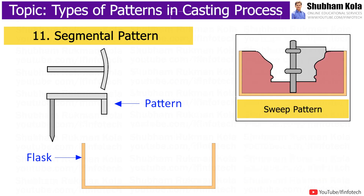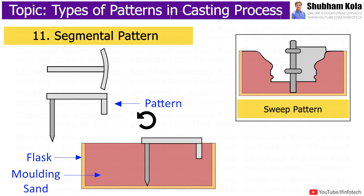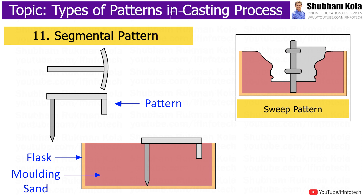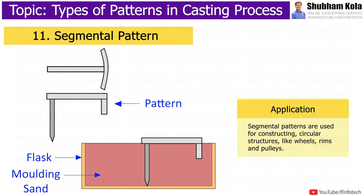Segmental pattern is just similar to sweep pattern; their working structure is almost similar. For designing the required shape or structure of mould, they both employ a part of the pattern. As the name suggests, segmental pattern is in the form of segments and is used for moulding circular or round structures. In sweep pattern there is complete rotation, but in segmental pattern there is no complete rotation — we can rotate partly to get the required output. The segmental pattern is used for constructing circular structures like wheels, rims, and pulleys.